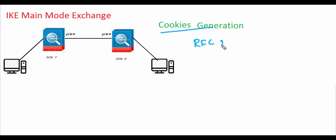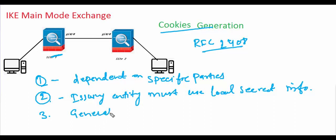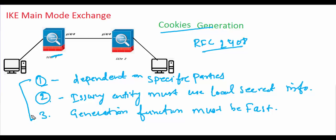As per RFC 2408, the cookie generation method is implementation dependent, but it must satisfy three basic requirements: cookies must be dependent on the specific parties involved; it must not be possible for anyone other than the issuing entity to generate accepted cookies, meaning the issuing entity must use some local secret information; and the cookie generation function must be fast.